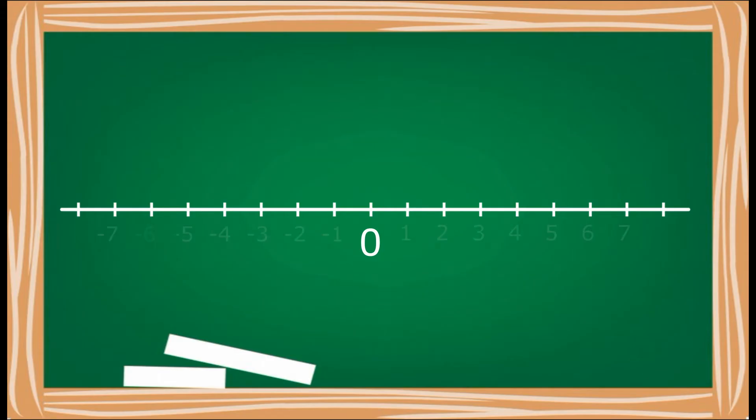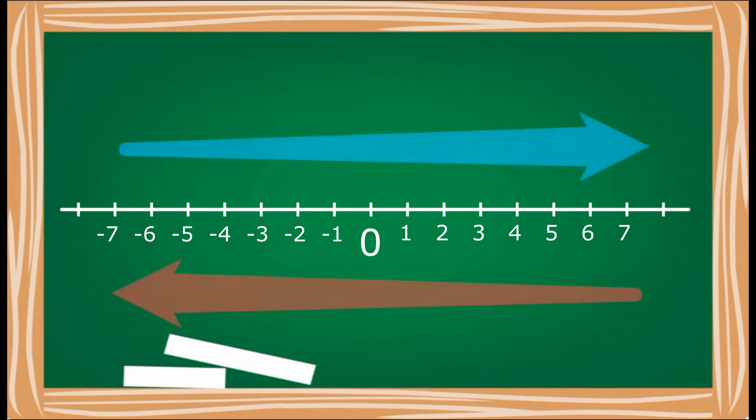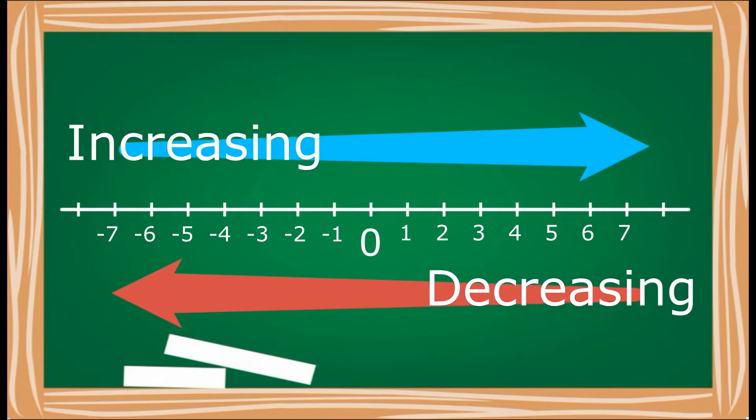Now, the numbers to the right of zero are called positive integers. To the left are negative integers. Integers going to the right is increasing. On the other hand, going to the left is decreasing.